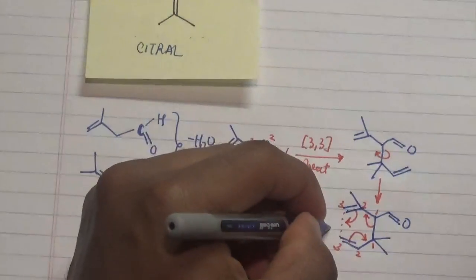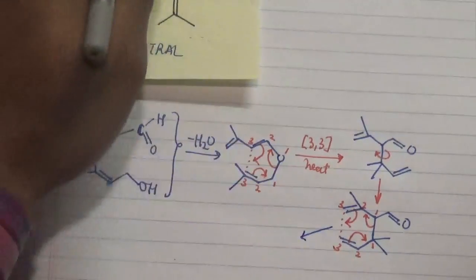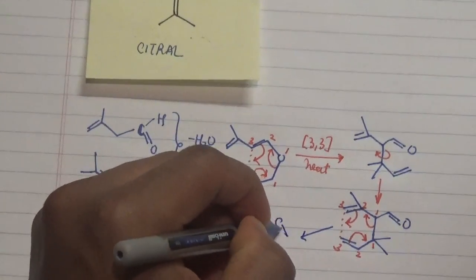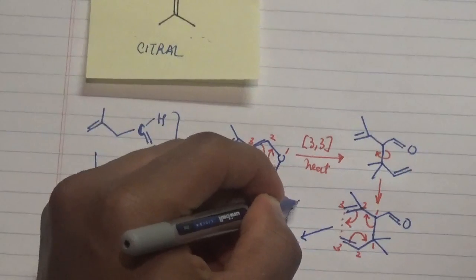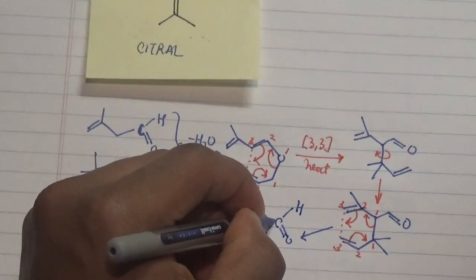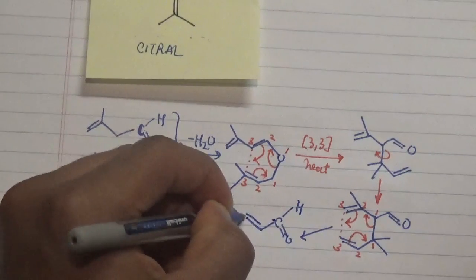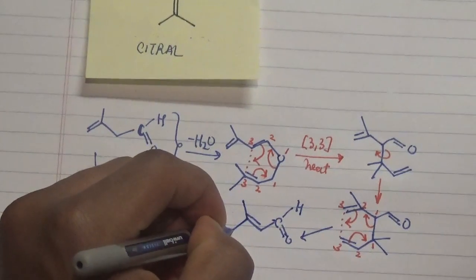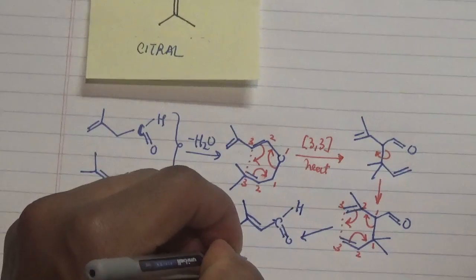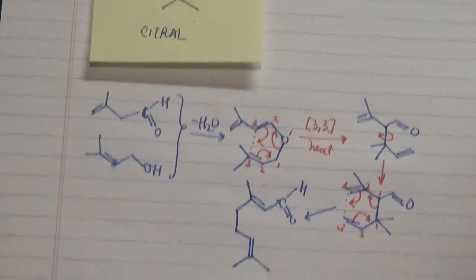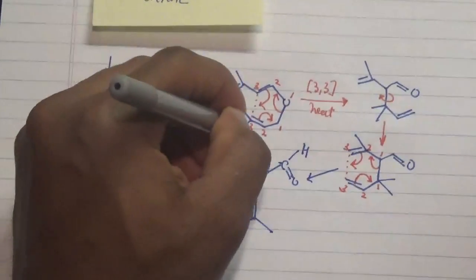This forms a double bond, this breaks off, and what we have is the formation of our product which is this particular C12 compound with oxygen attached to carbon, a double bond here with a methyl group attached to another methyl group, and this is our other double bond.